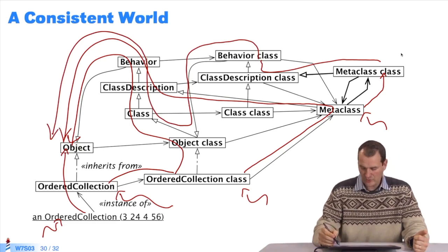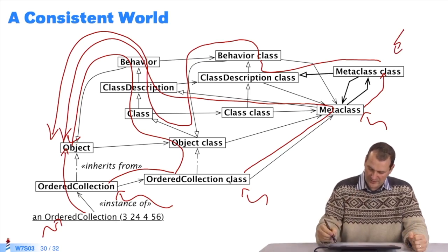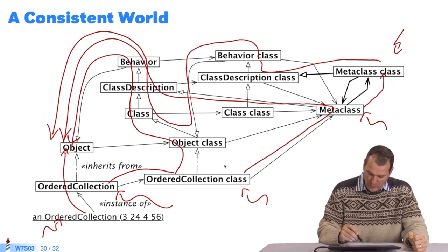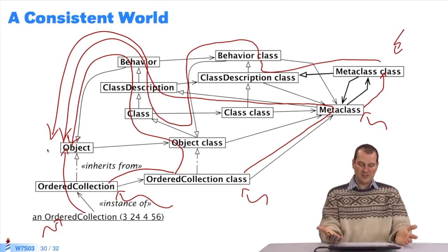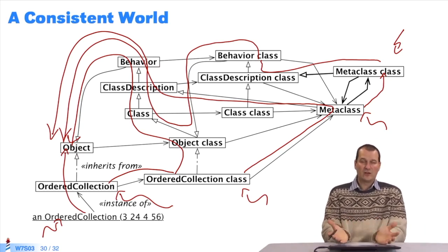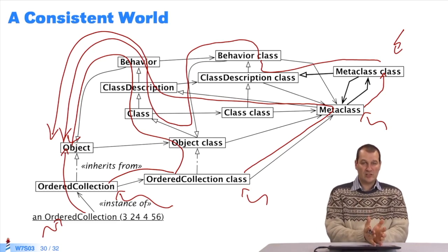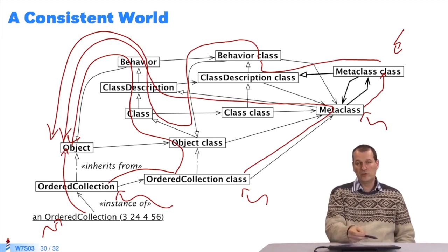Similarly, if I send a message to metaclass class or to ordered collection class, I look in the instance of metaclass class, which is metaclass. Like for ordered collection class, I follow this path. You will see that this graph is entirely logical. We cannot have an inconsistent graph, since the virtual machine only does one thing. It looks for messages in the class and follows the inheritance chain. This comprehensive graph is consistent with that process.